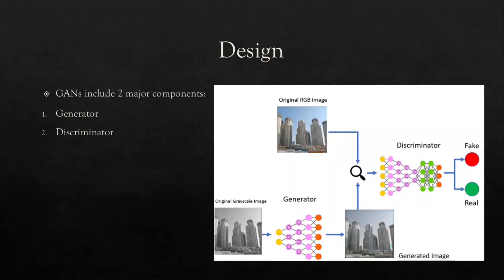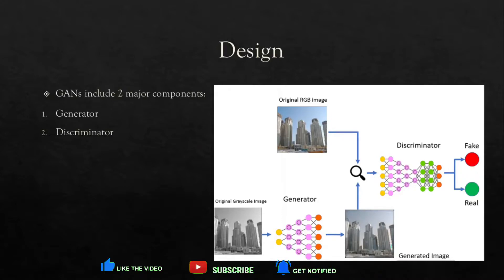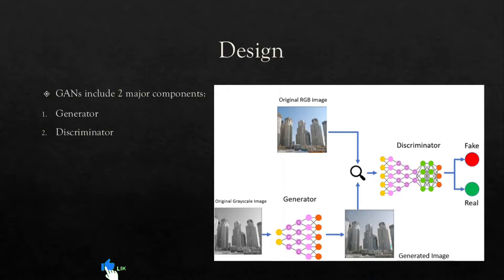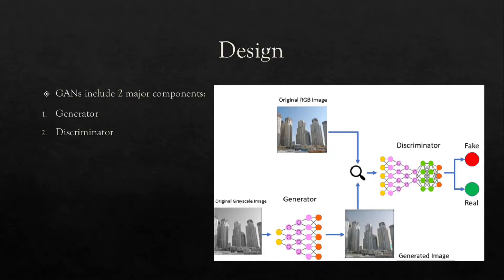There were two major components: the generator and the discriminator. For the generator, we input an original grayscale image and it outputs a generated RGB image. We then pass the generated RGB image along with the original RGB image to the discriminator, which figures out whether the image is fake or real. This whole cycle runs for further epochs.